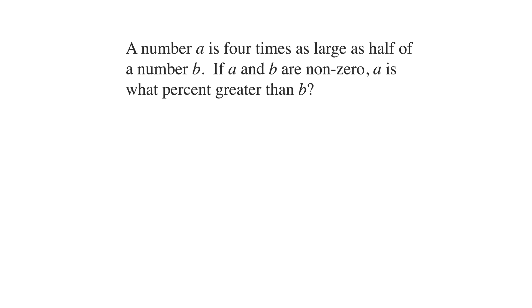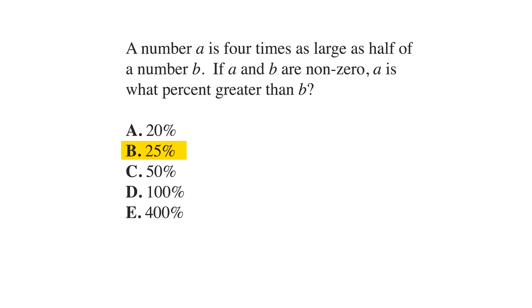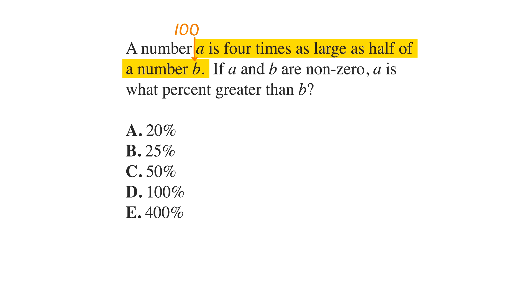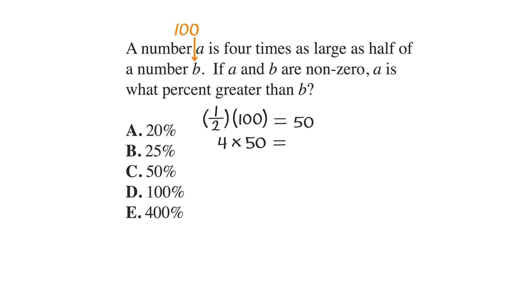A number A is 4 times as large as half of a number B. If A and B are non-zero, A is what percent greater than B? The answer choices are A) 20%, B) 25%, C) 50%, D) 100%, and E) 400%. Since it's a percentage problem, we'll pick 100 for B. Half of 100 is 50, and 4 times 50 is 200, so A equals 200.